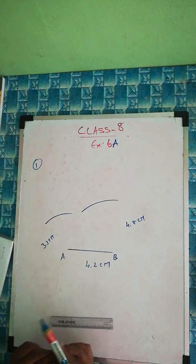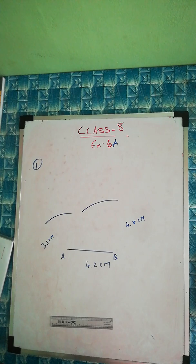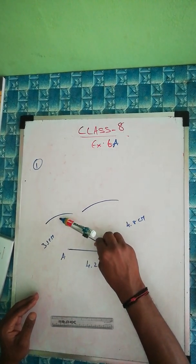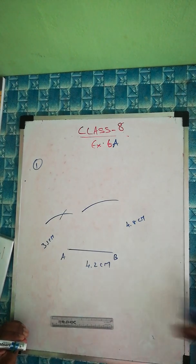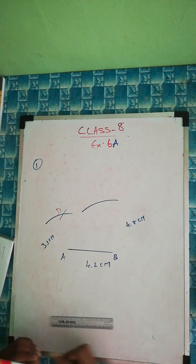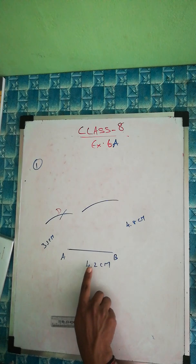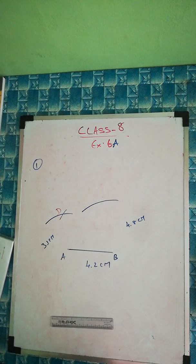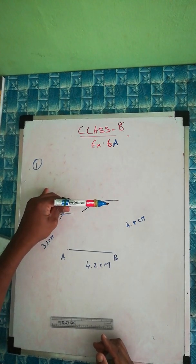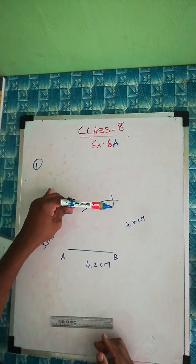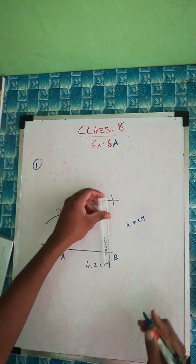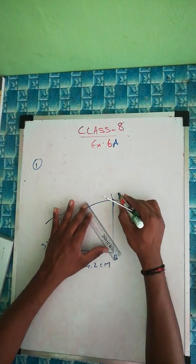Take BD as 6.7 cm. From B, use your compass, take 6.7 cm, and cut an arc — that intersection point is D. Now for CD, which is 6.3 cm: since we know where D is, from D take 6.3 cm with the compass and cut an arc to find C.